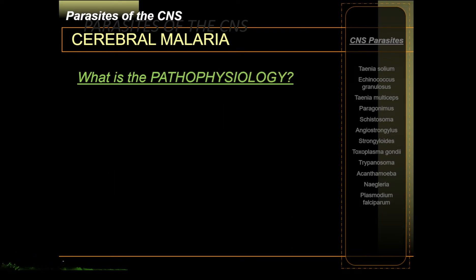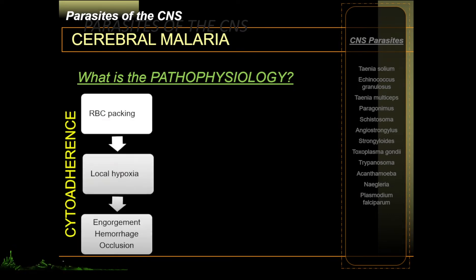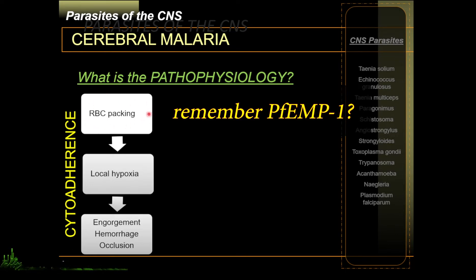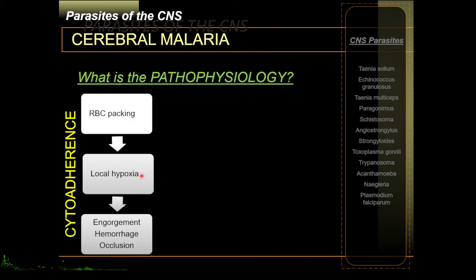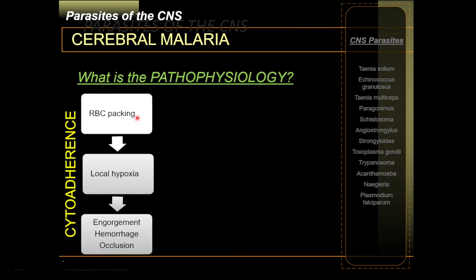The old theory is the cytoadherence pathophysiology, wherein there is clumping or sticking of red blood cells into the endothelium. They pack together in the endothelium of the smaller blood vessels, particularly in the brain, and block the blood supply, causing local hypoxia. Because of the blockage, there is also engorgement, hemorrhage, and occlusion. All these are primarily mechanical reasons caused by the RBC packing or cytoadherence, which causes the symptoms and sequelae associated with cerebral malaria.